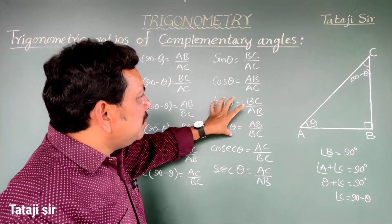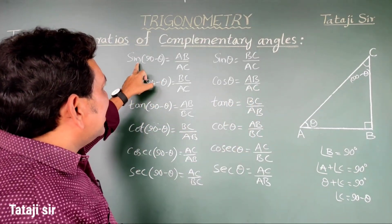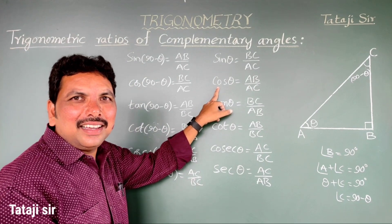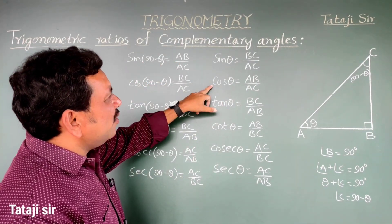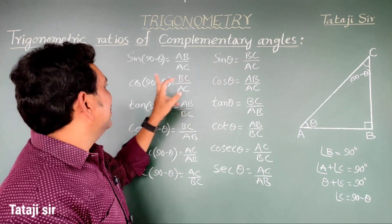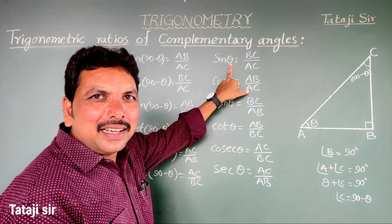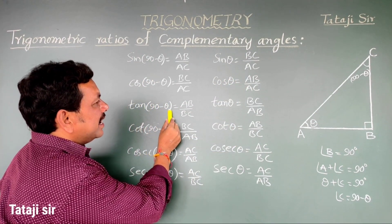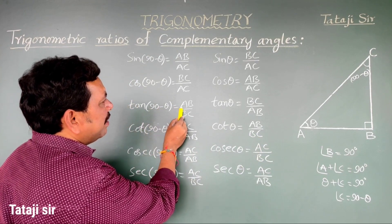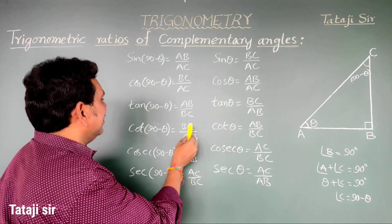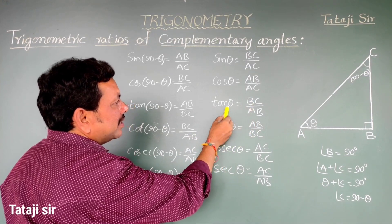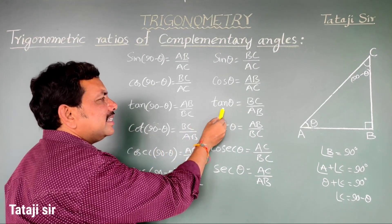Observing both tables: sine of 90 minus theta equals AB by AC, which is cos theta. So sine 90 minus theta equals cos theta. Similarly, cos 90 minus theta equals BC by AC, which is sine theta. Tan 90 minus theta equals AB by BC. Looking at the theta table, AB by BC is cot theta, so tan 90 minus theta equals cot theta. And cot 90 minus theta equals BC by AB, which is tan theta.